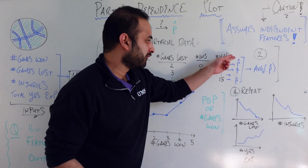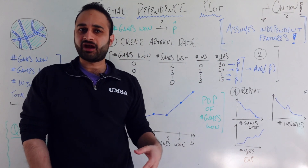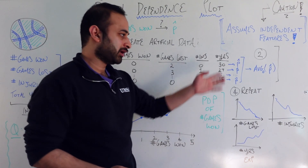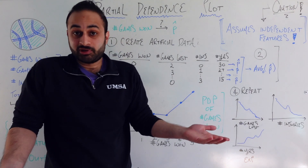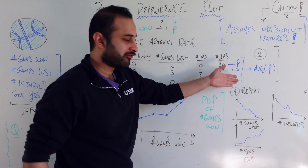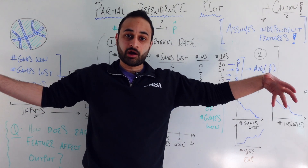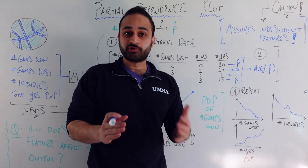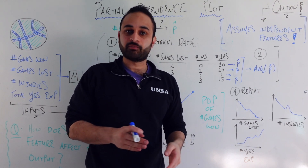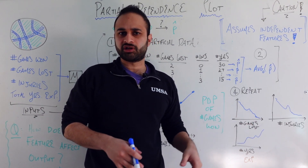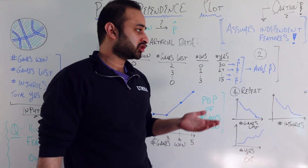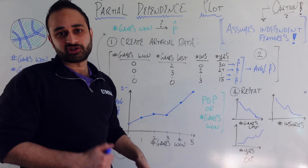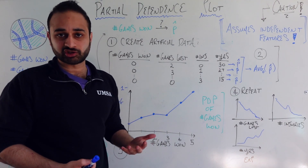There are other disadvantages as well. For example, we just take an average of all the predicted probabilities, and that average can blur out important deviation. It would be useful to see whether those predicted probabilities are very spread out versus clustered closely together — in both cases the average might be the same, but we lose that standard deviation information. You can remedy this by showing a full distribution for each value instead of just a single point estimate.